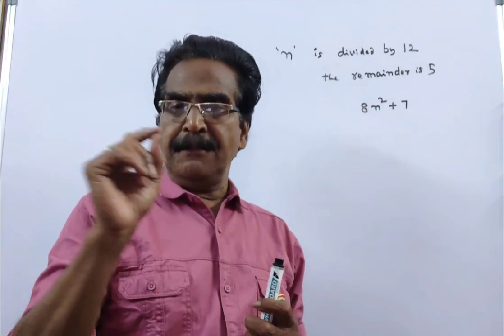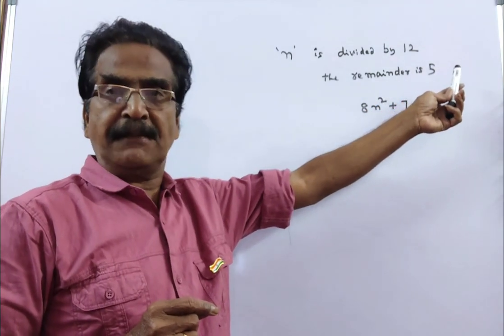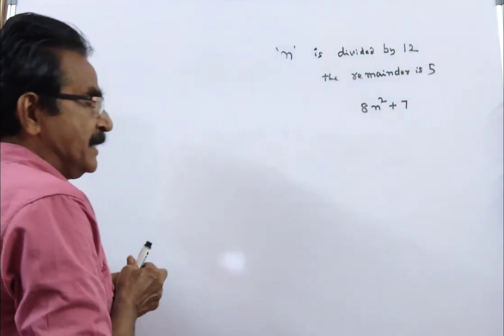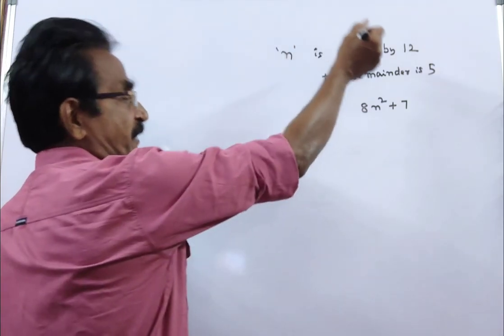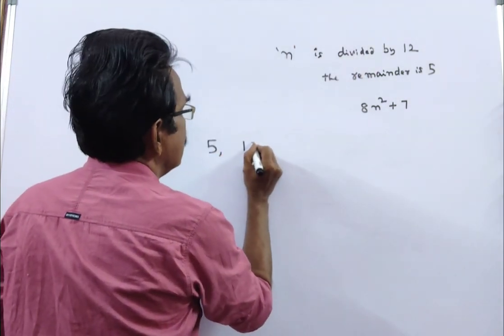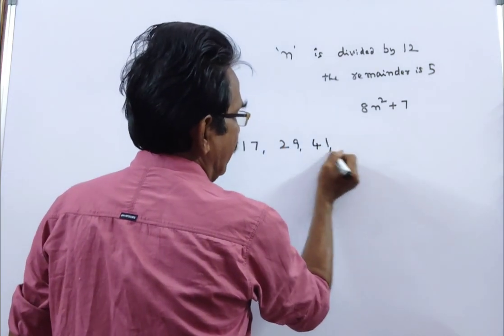The numbers which leave remainder 5 when divided by 12 are 5, 17, 29, 41, and so on.